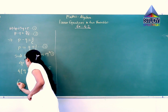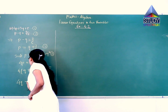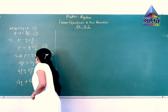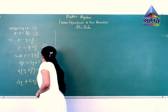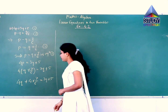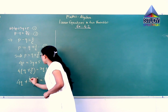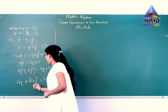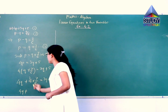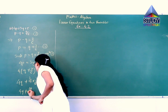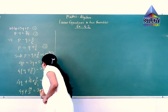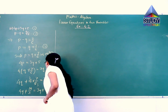Let us multiply. It will be 4Q plus 4 into 7 by 6 is equal to 3Q plus 5. Here, 2 into 4 and 2 into 6, so we get 4Q plus 14 upon 3 is equal to 3Q plus 5.